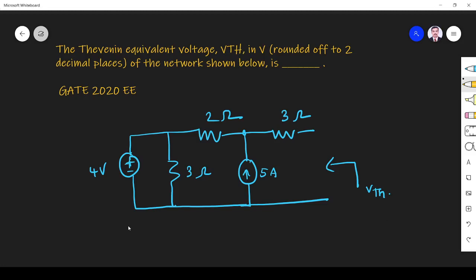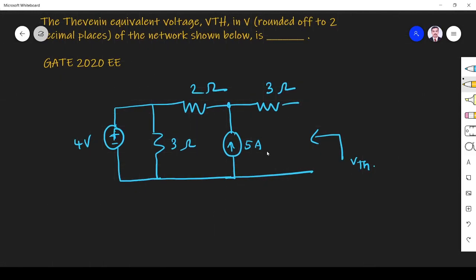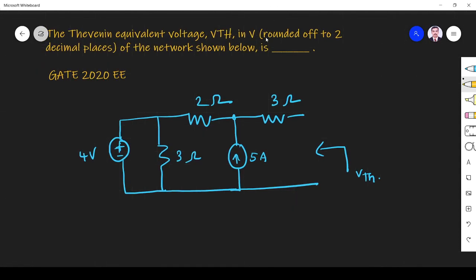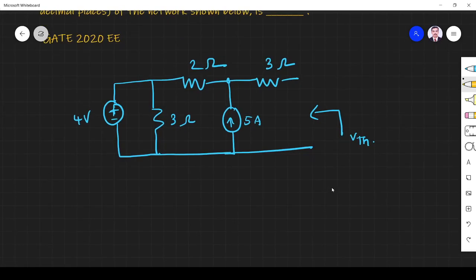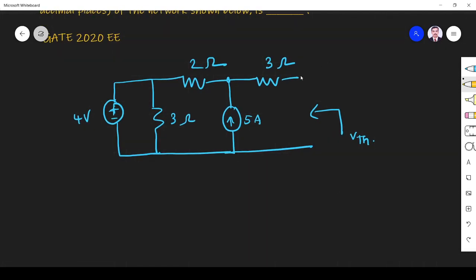Hi friends, in this video let us solve an intro related question asked in GATE 2020 EEE paper. The question is: the Thevenin equivalent voltage V-Thevenin in volts, rounded off to two decimal places, of the network shown below is blank. So V-Thevenin we have to find, the voltage across this terminal and this terminal AN.